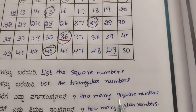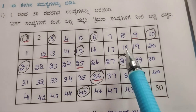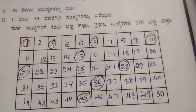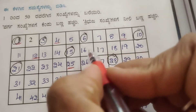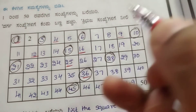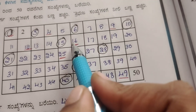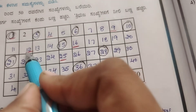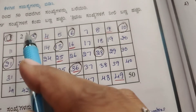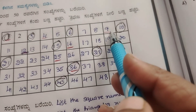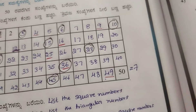How many square numbers are there? Let's count: 1, 4, 9, 16, 25, 36, 49 — there are 7 square numbers.